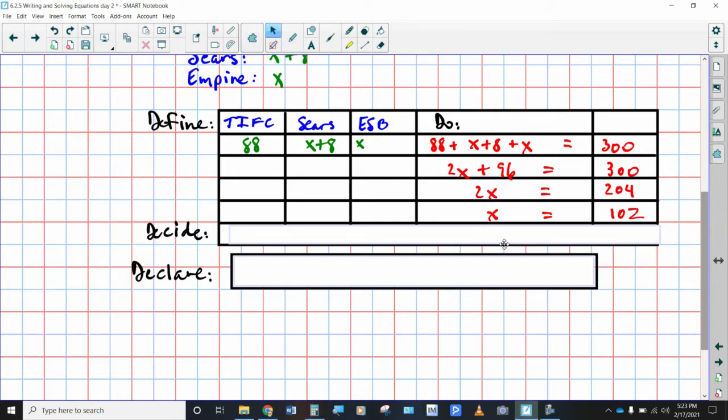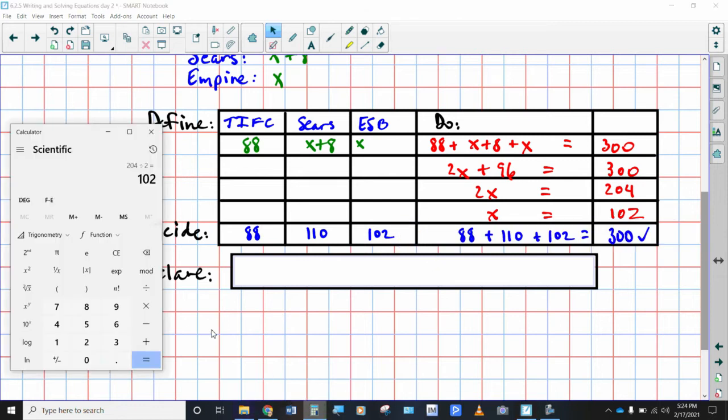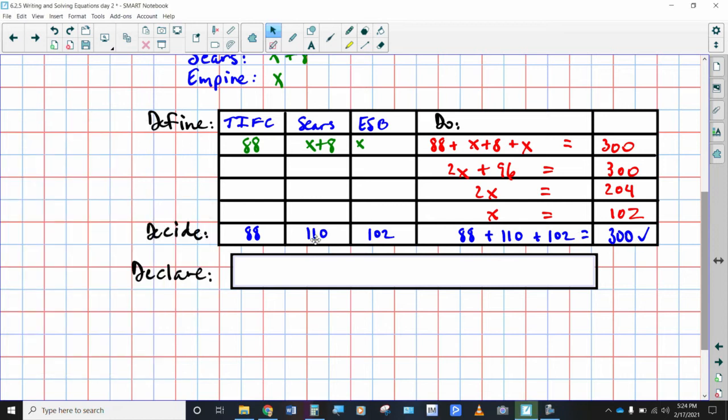So if I've done everything correctly, I should be able to take these numbers say, okay, we know the 88 is what it is. We know that or we think X is supposed to be 102. So Sears Tower would be 102 plus eight, which would be 110. And then Empire State Building is 102. So when you add all three of those numbers together, let's make sure 102 plus 110 plus 88 is equal to 300. Yes, it is. So we have now decided, we checked it, we feel confident.